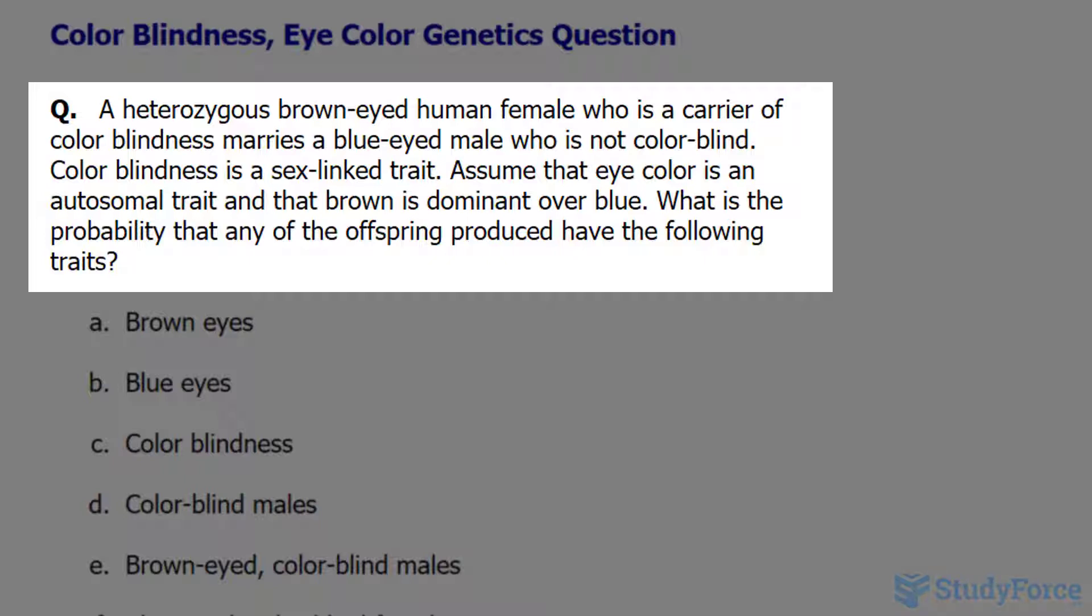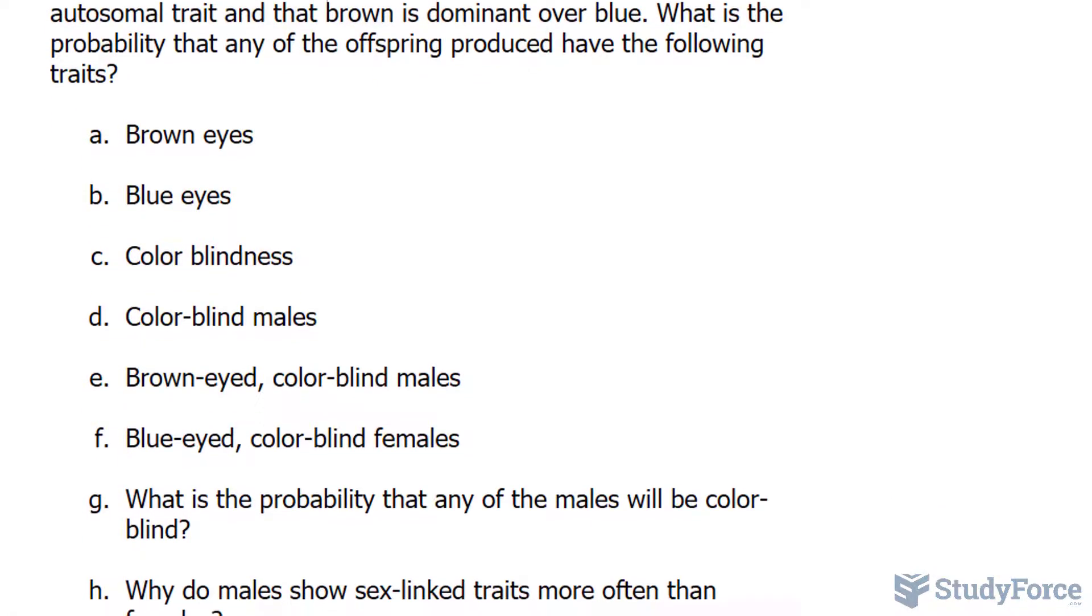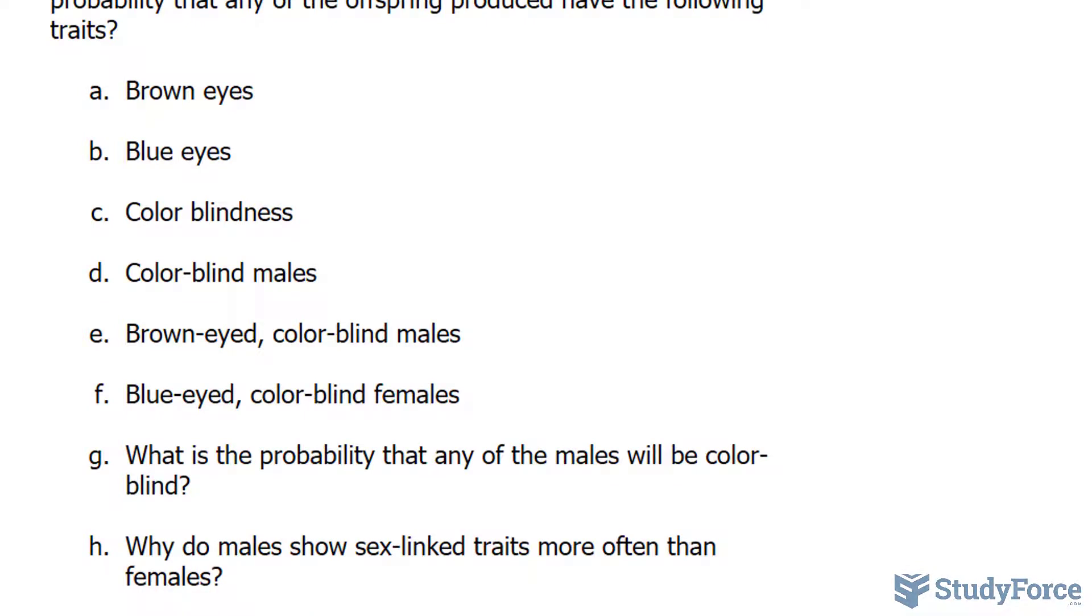Assume that eye color is an autosomal trait and that brown is dominant over blue. Autosomal means that the gene is located on a non-sex chromosome. What is the probability that any of the offspring produced have the following traits? We have to look at these questions labeled A through H.